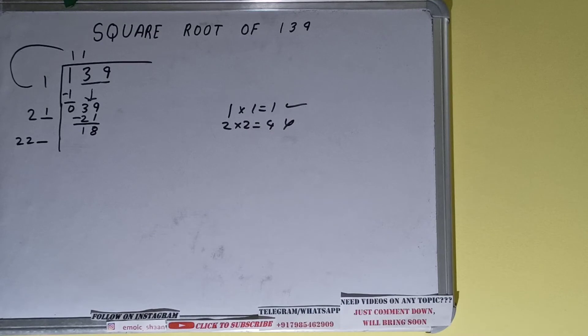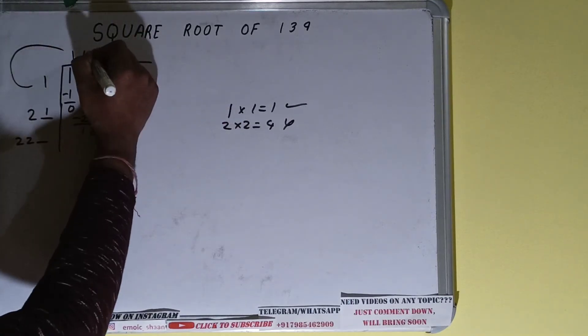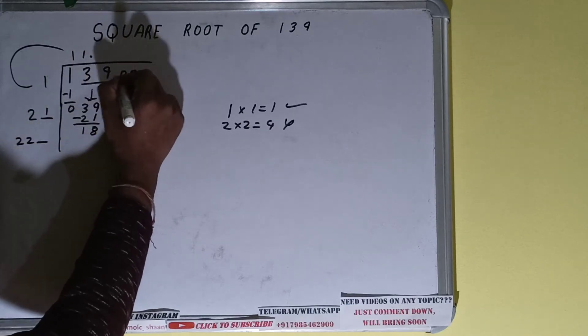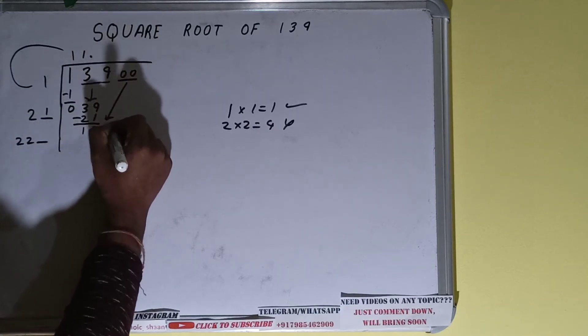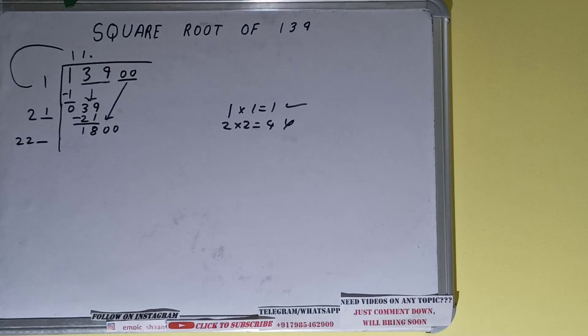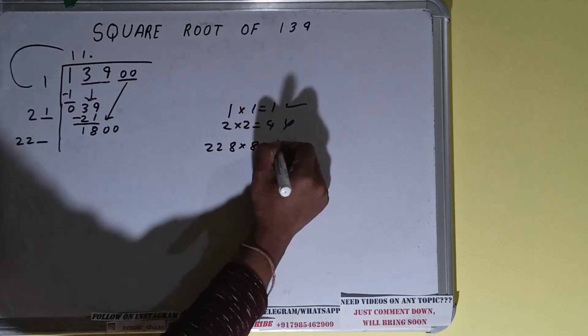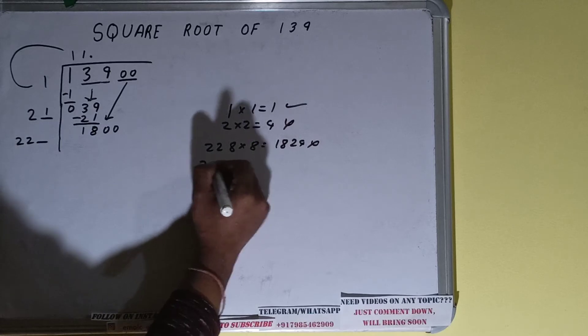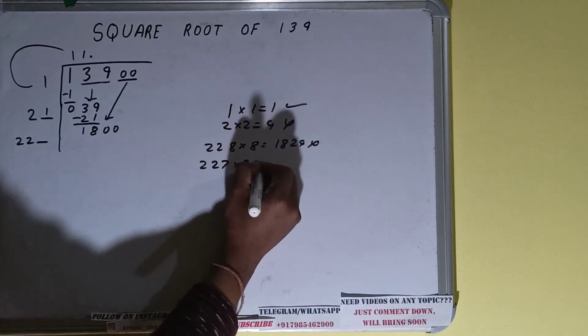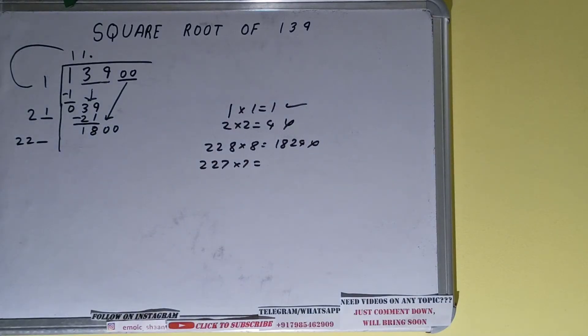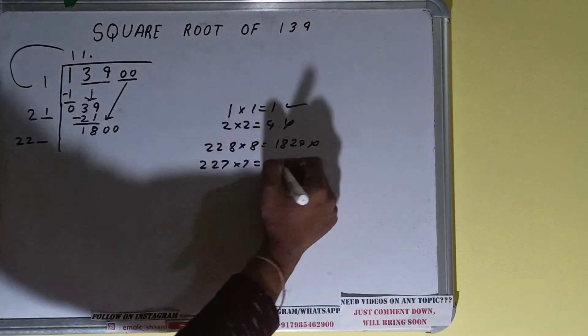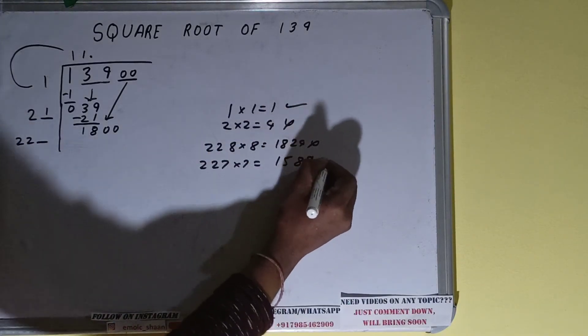But we don't have any more pairs present, so what we'll do is put a decimal. Once we put decimal we can bring down pairs of zeros. The number will become 1800. Now we can try eight times. 228 into 8 we can try, it will give 1824 which is slightly bigger than the number.